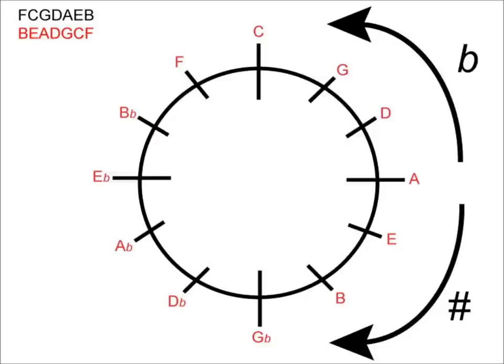Let's try a few different examples. E minor first — it's on the sharp side of the circle and one notch away from A, so we know it has one sharp in the key signature. B minor is also on the sharp side of the circle and two notches away from A, so we can deduce that it has two sharps in the key signature. How about G minor? We're now looking at the flat side of the circle and it is two notches away from A, so we can calculate that G minor has two flats in its key signature.